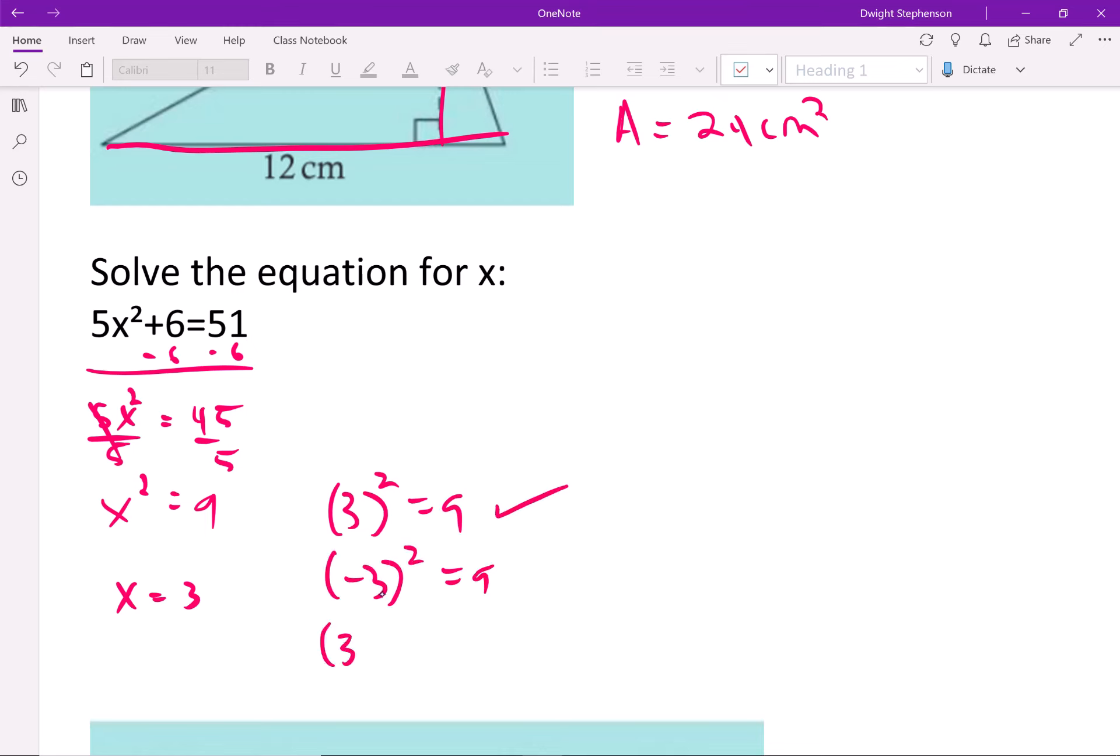Because negative 3 squared means negative 3 times negative 3, and negative times a negative is positive. So really there's two answers to this, minus 3 and negative 3, which we often times write as plus or minus 3, like such. So that's how that one goes.